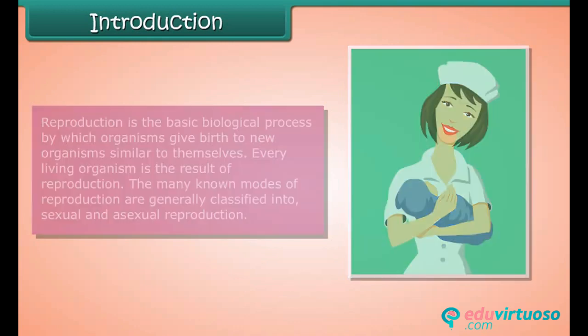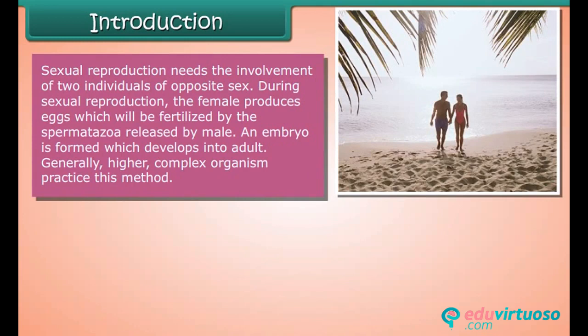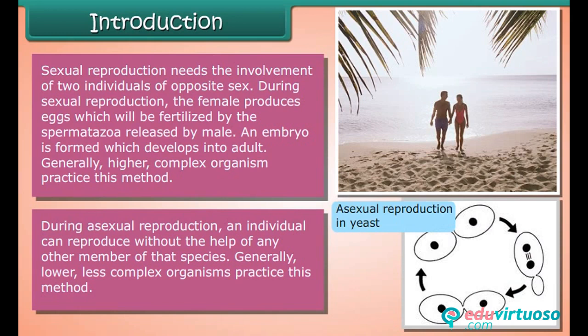Sexual reproduction needs the involvement of two individuals of opposite sex. During sexual reproduction, the female produces eggs which will be fertilized by the spermatozoa released by the male. An embryo is formed which develops into an adult. Generally, higher and more complex organisms practice this method. During asexual reproduction, an individual can reproduce without the help of any other member of that species.